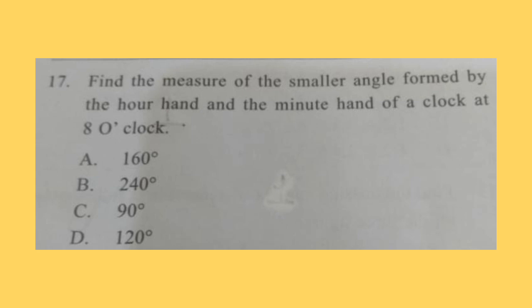Question 17: Find the measure of the smaller angle formed by the hour hand and minute hand of a clock at 8 o'clock. Think about your answer. Correct answer is option D, 120 degrees.